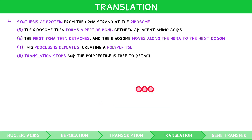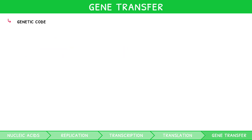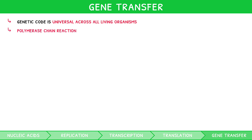If you are studying IB Biology higher level, you will explore the processes in greater depth in topic 7. The genetic code created by the processes of transcription and translation is universal across all living organisms, which allows for cross-species biological replication of DNA. However, the IB focuses in greater depth on chemical replication of DNA through the polymerase chain reaction, PCR. This is used when minute quantities of DNA must be replicated, for example, at crime scenes.